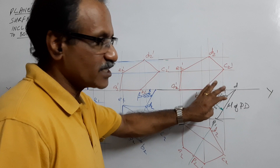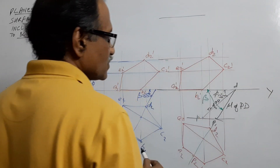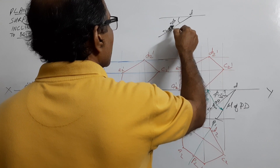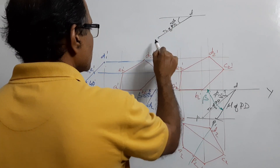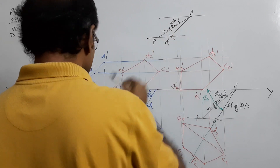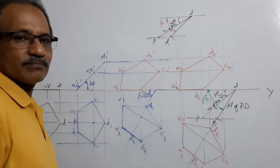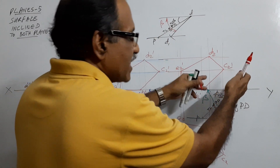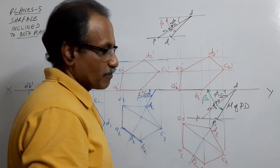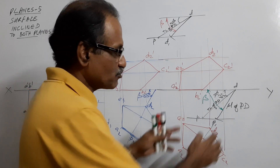Instead of making this construction inside the main drawing, you can make it elsewhere and find the value of beta. Simply draw a horizontal line anywhere, take the true length of PD, draw the line at phi, locate P, draw the locus, take the plan length, cut an arc to get D1, and measure that angle — that is beta. Use that beta to draw a line and construct the plan. This keeps the main drawing neat and clean, though it can be incorporated inside the drawing at the cost of being a little untidy.